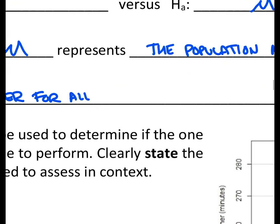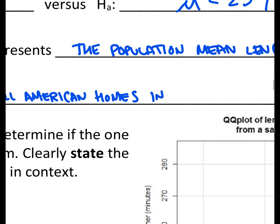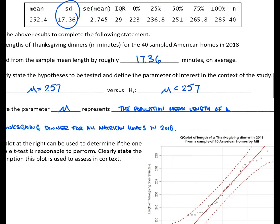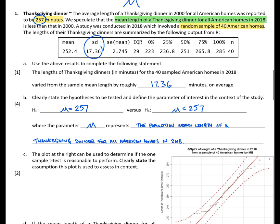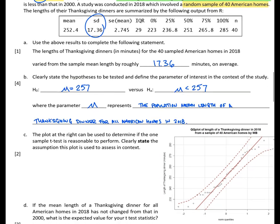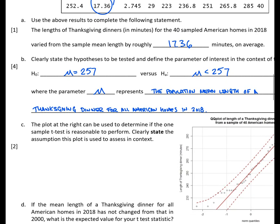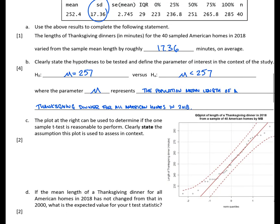So for all American homes. So all I did was pull that context directly from the problem background to define our parameter, μ. Okay, moving on to question C.